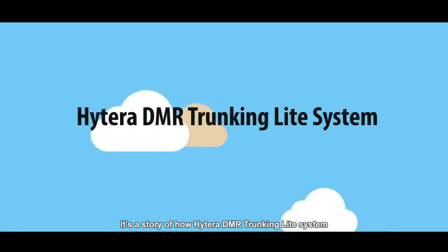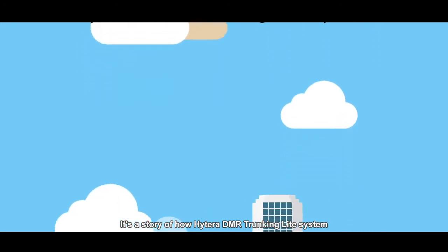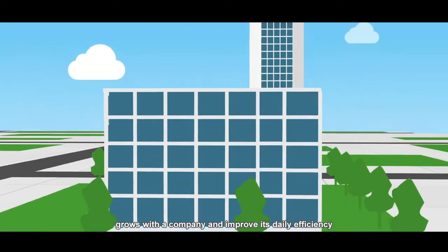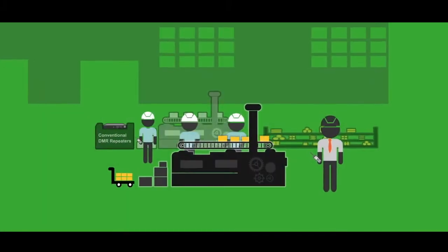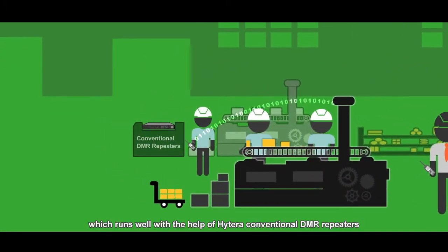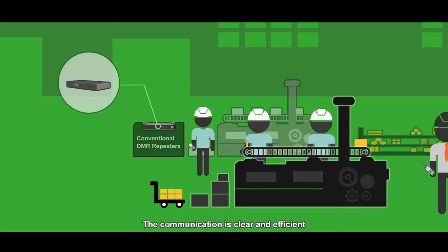It's a story of how Hytera DMR trunking light system grows with a company and improves its daily efficiency. The company owns a factory which runs well with the help of Hytera conventional DMR repeaters. The communication is clear and efficient.